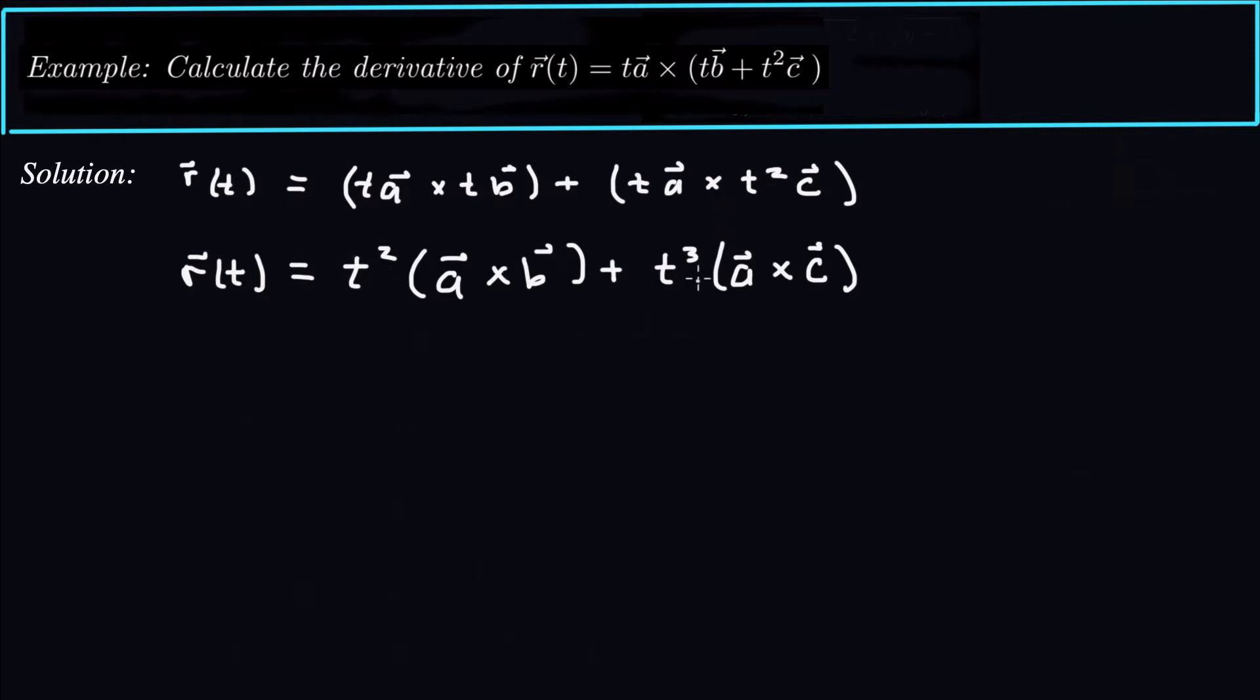Alright, so now I've got our vector function written a little more cleanly, and here's a constant vector and here's a constant vector. Now to take the derivative, just treat those constants like you would when you normally take derivatives. And this is going to become 2t times the constant a cross b plus 3t squared times the constant a cross c.